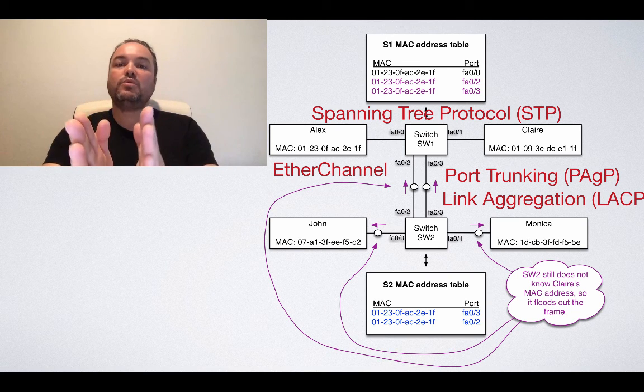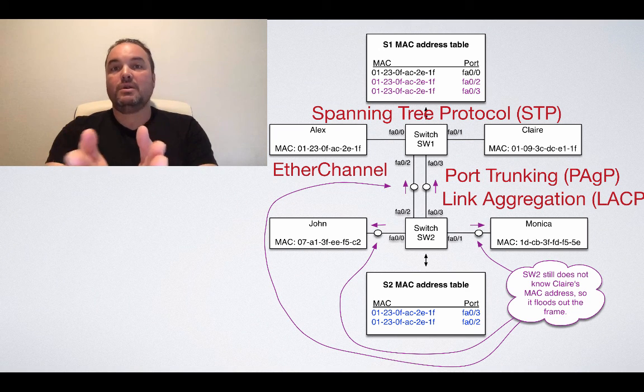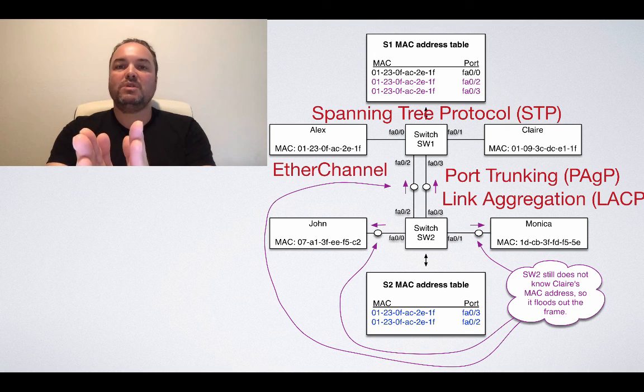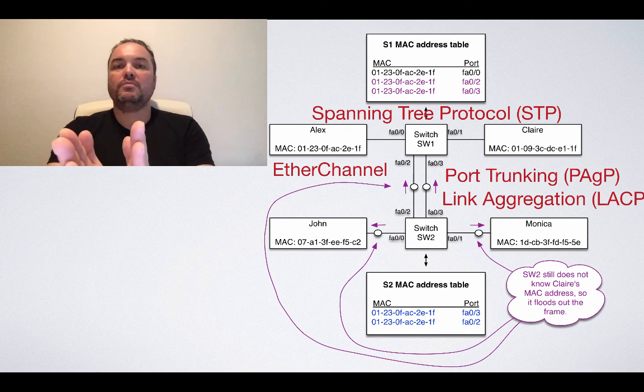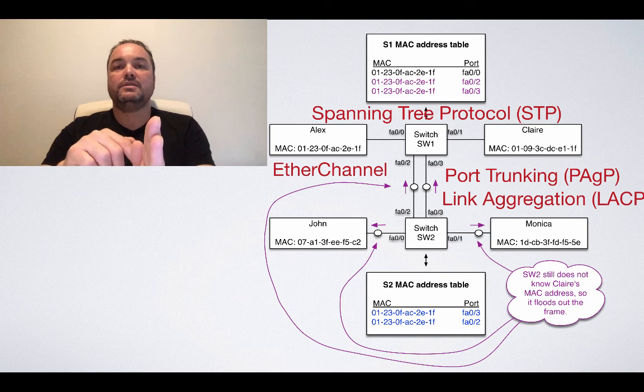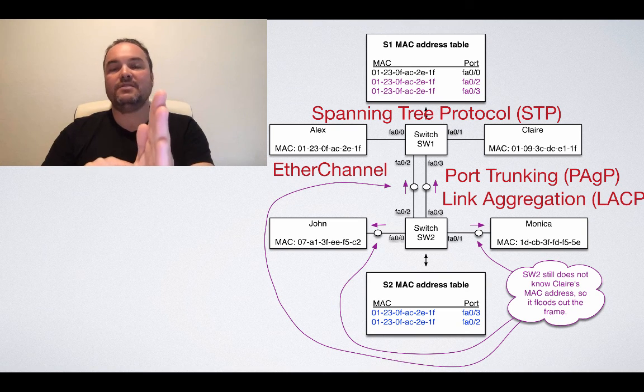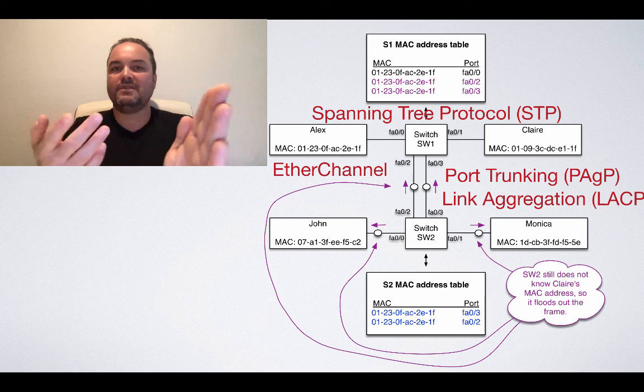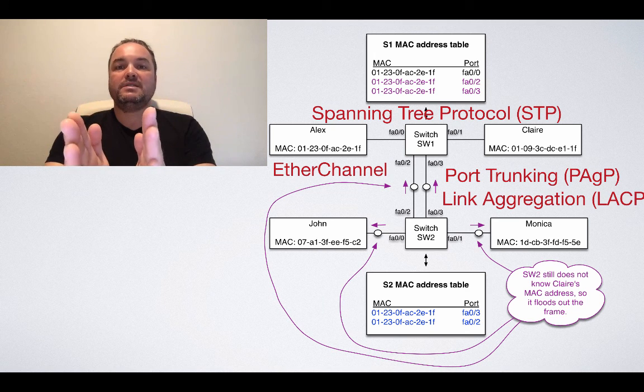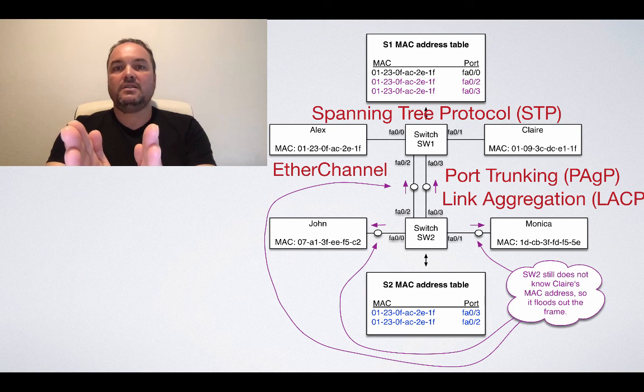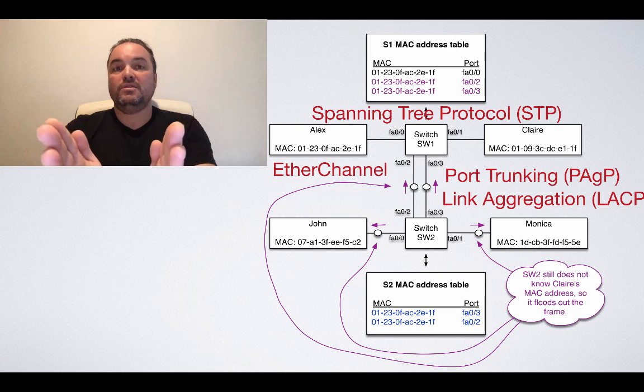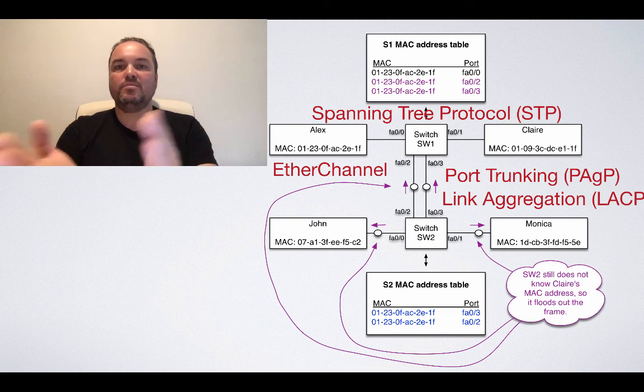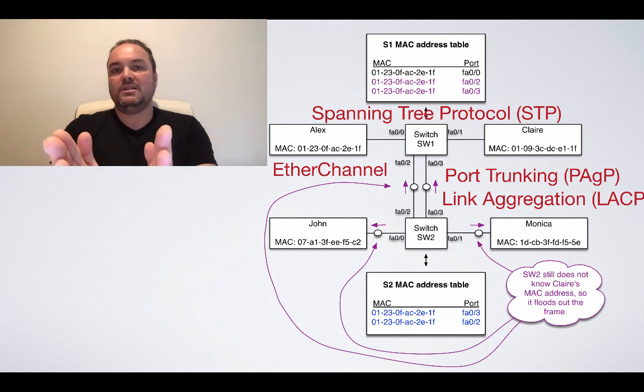STP essentially shuts down one of the ports. It keeps it in standby mode. So in our example here, what would happen is that only one of the ports would be active between the two switches. The other port would be standby. So then you don't have a loop problem anymore, because once switch two receives the frame from switch one on the active link, it's not going to flood it back, because it cannot flood it back to the port where it came from, if you remember. So we don't have that problem anymore. That's how STP fixes the problem. The caveat though is that the second link that you have, it's only in standby. It's never going to be used unless the main link fails. And that's not very good because you end up wasting money on an additional link and cables and ports that you may never need unless the main link fails.